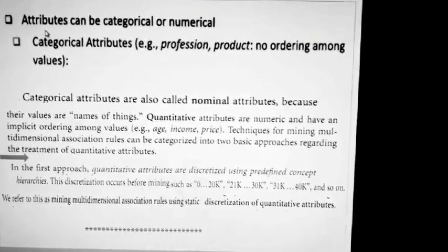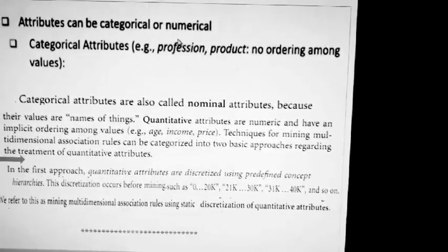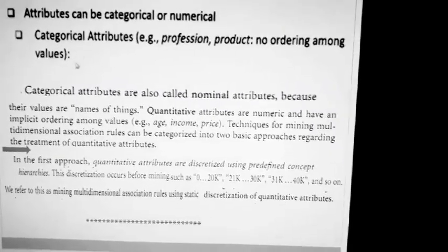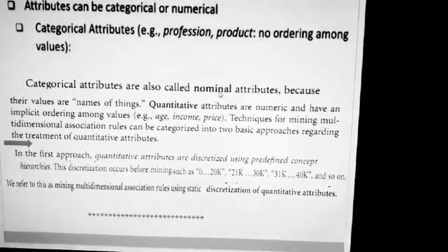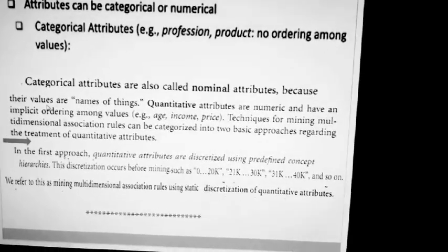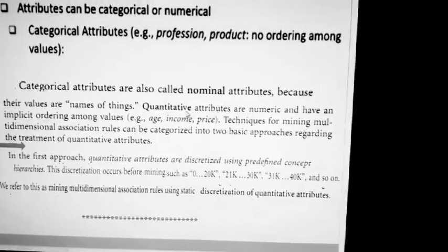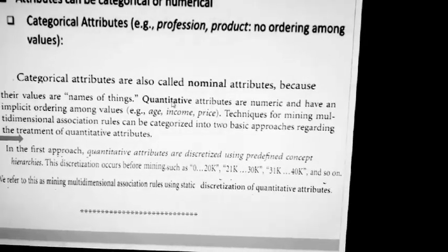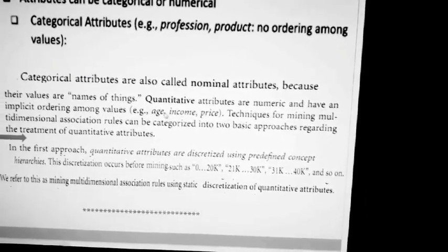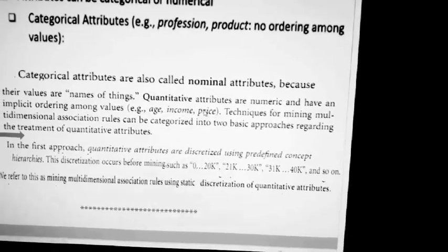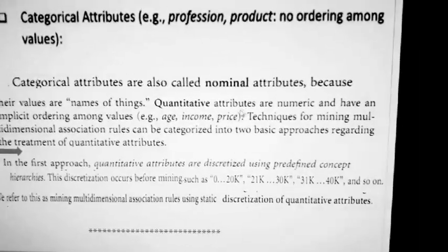In the rule, we have different attributes such as age and occupation, and these attributes may be of two types: categorical or numerical. Categorical attributes are also called nominal attributes because their values are names of things. Quantitative attributes, as the name indicates, are numeric. Examples like age, income, and price only allow numeric values, so they are called quantitative attributes.